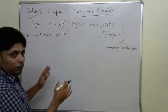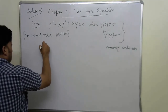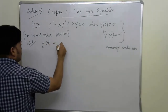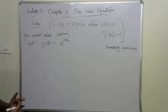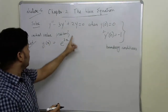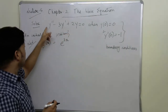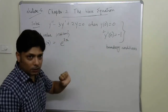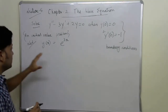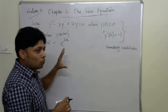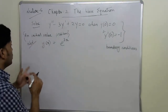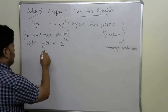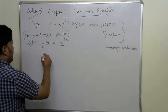To solve this equation, we assume y(x) = e^(λx) as a solution. Taking the first and second derivatives: y' = λe^(λx) and y'' = λ²e^(λx). Substituting back into the equation and factoring gives: y(λ² - 3λ + 2) = 0. This leads to the auxiliary equation: λ² - 3λ + 2 = 0.